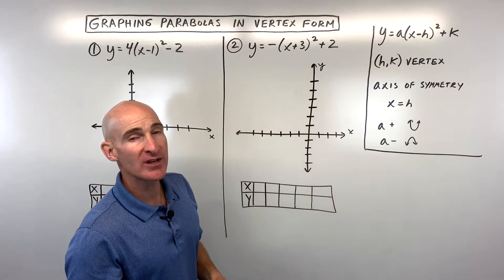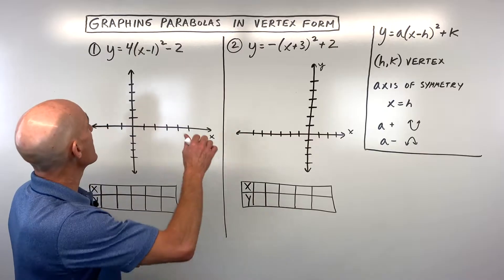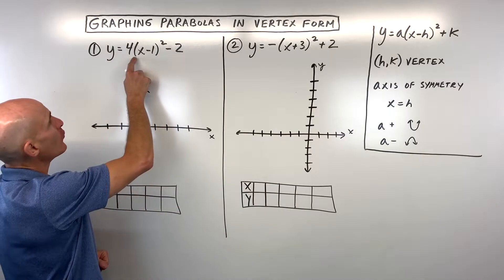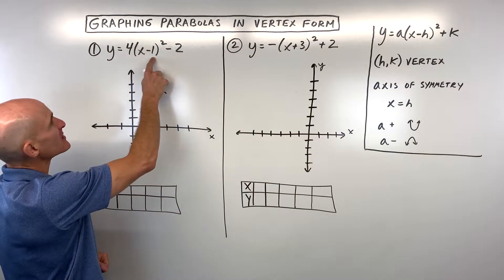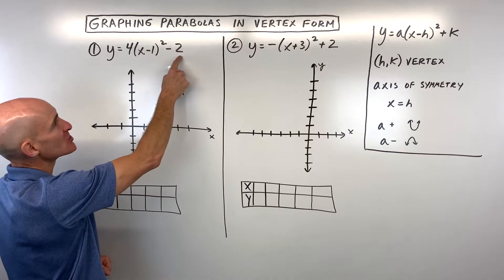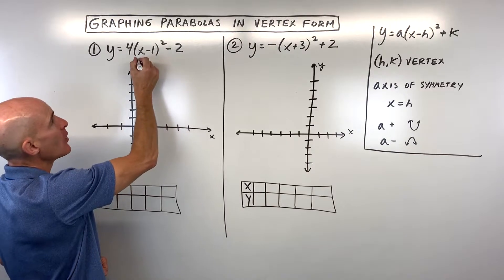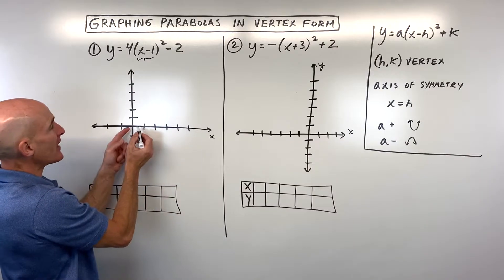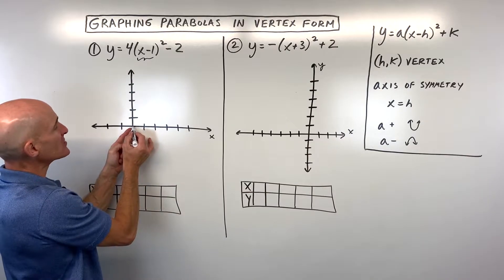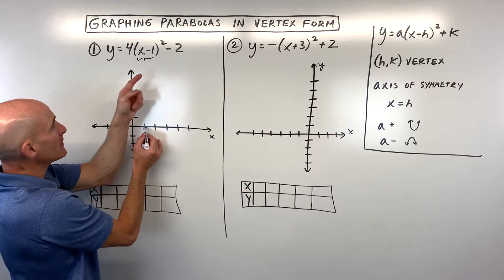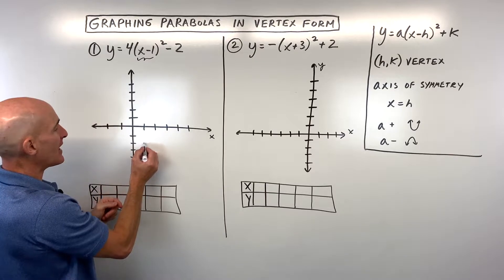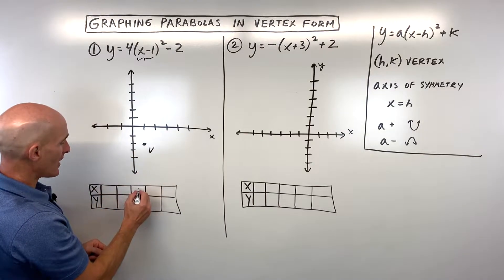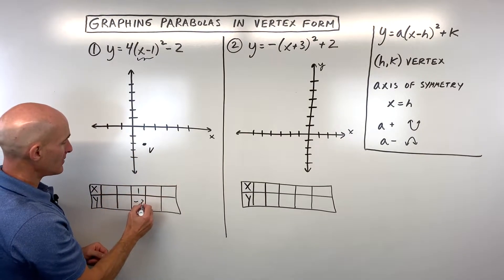So let's go through three examples — you'll get a feel for how to do this. For the first example, we've got y equals 4 times x minus 1 squared minus 2. So where is the vertex? Remember that the number grouped with the x has the opposite effect. So the minus 1 is actually going to shift the graph right 1. The minus 2 is going to shift it down 2. So that's going to be our vertex right there at 1, negative 2.